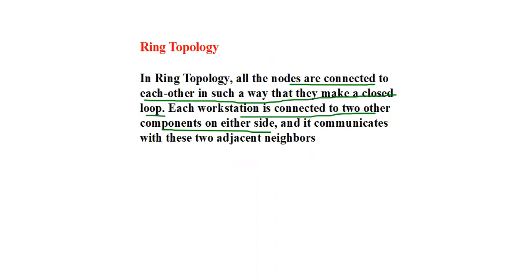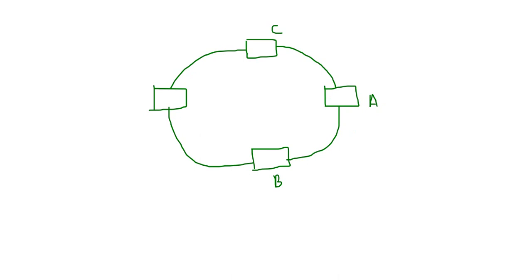Each workstation communicates with its two adjacent neighbors. So A communicates with B and C. Now, in ring topology, data flows in one direction only — either in clockwise direction or anti-clockwise direction. Suppose here data flows in the clockwise direction.